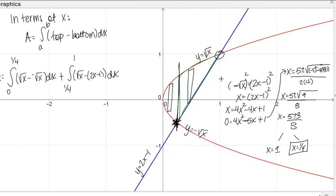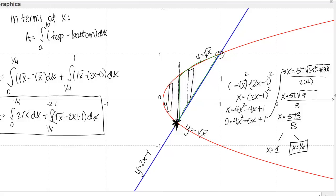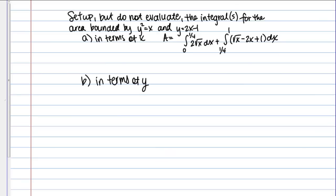We were only asked to set up the integral, so we don't need to solve it. Simplifying: square root of X minus negative square root of X becomes 2 root X for the first integral. The second integral can be written as root X minus 2X plus 1. This is the answer for part A, and if evaluated it would give the area of the region.